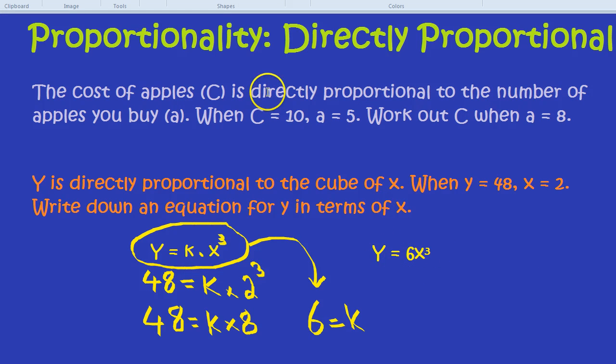To recap, directly proportional means as one thing goes up, the other thing goes up by a certain scale or multiplied by a certain constant according to the portions, like portions of apple or portions of chips. So what you do is you write the first thing equals K times the second thing. Sometimes they'll say directly proportional to the cube of X, so it's Y equals K times X cubed. Sometimes they'll say directly proportional to the square of X, so that would be Y equals K times X squared.